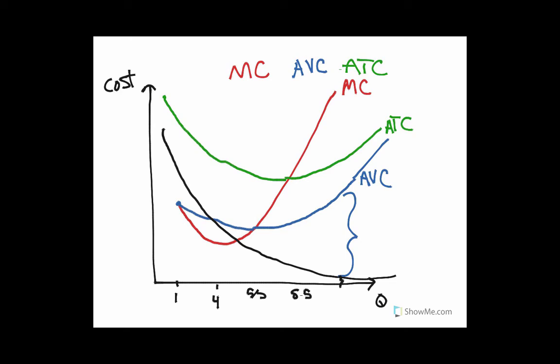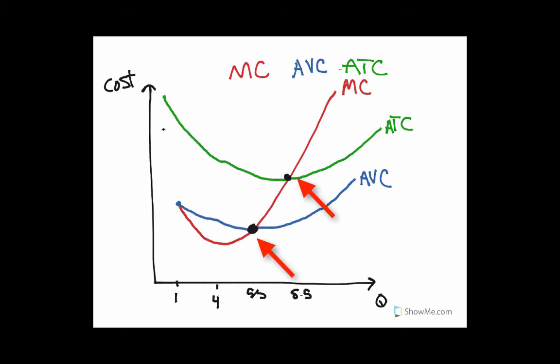That's really it for our cost curves. The important points to remember are the intersections — where marginal cost equals average variable cost and where it equals average total cost. Marginal cost will always intersect the average variable cost and average total cost curves at their minimum. When marginal cost intersects and goes from below to above an average curve, it's where it starts to go from pulling it down to pulling it up. That's really the important takeaway from these graphs.